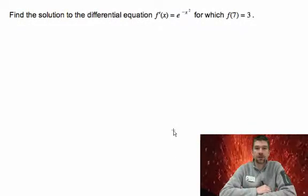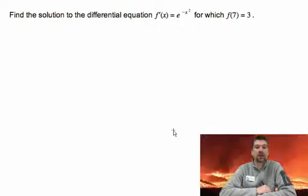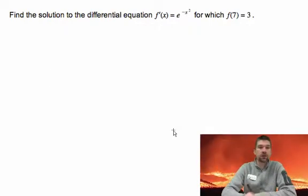Okay, we're going to find the solution to the differential equation f prime of x equals e to the negative x squared for which f of 7 equals 3.